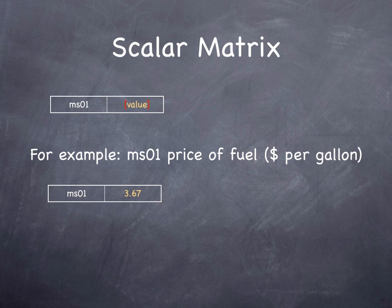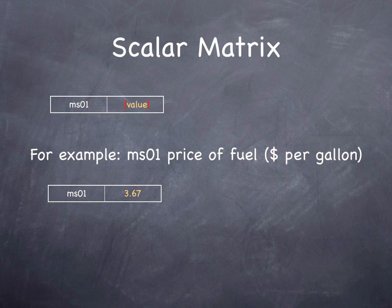Scalar matrices are just a fancy name for a constant, which can be added, subtracted, multiplied, or divided with all the cells in another matrix. For instance, the scalar might be the price of fuel. To estimate the total travel cost of fuel for all travelers, you might multiply all the cells in the trip distance matrix with all the cells in the trip table matrix, with a scalar representing the average miles per gallon, with another matrix representing the price of fuel.